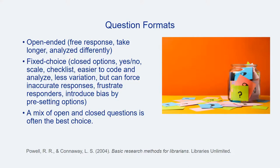Survey questions also come in a variety of formats, including open-ended questions that allow respondents to answer in their own words. These can take longer to analyze and require different approaches than fixed choice questions. Fixed choice or closed questions are answered in predetermined ways through yes/no options, scales, checklists, and so on. Responses to these questions are easier to analyze and offer less variation, but they are also susceptible to inaccurate responses, can introduce bias by confining respondents to preset options, and may frustrate respondents, sometimes to the point of early termination of an entire survey. Typically, surveys used in library assessment include a mix of open and closed question formats.